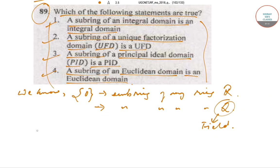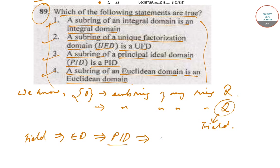We know that if Q is a field, that implies it is also a Euclidean domain. And that will imply that if it is a Euclidean domain, that will imply that it is a principal ideal domain. And if it is a principal ideal domain, that will imply that it is a unique factorization domain UFD. Then that will imply that it is an integral domain.